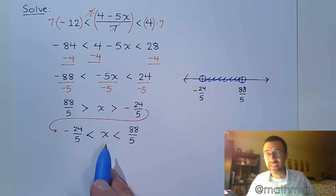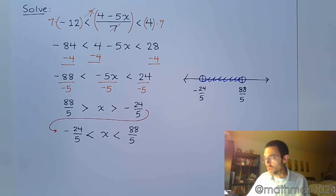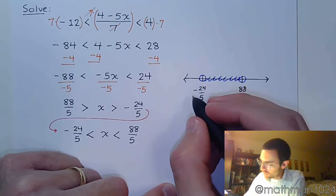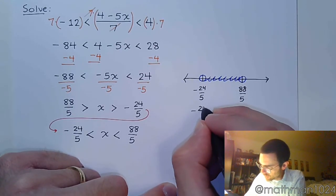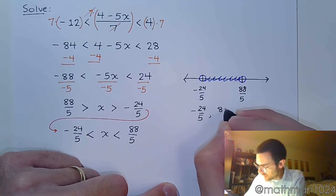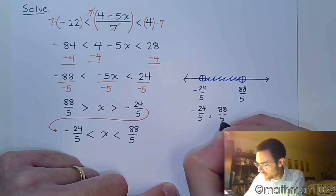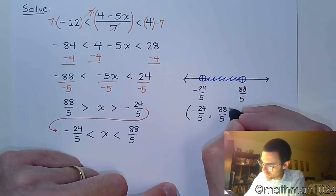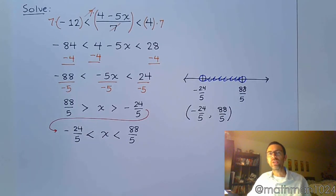Well, they're both less than and not equal to. So, we don't get to include those endpoints. So, we go straight from here to the interval notation. So, that's negative 24 over 5 to 88 over 5. And we're not including those endpoints. So, we get parentheses on both ends.